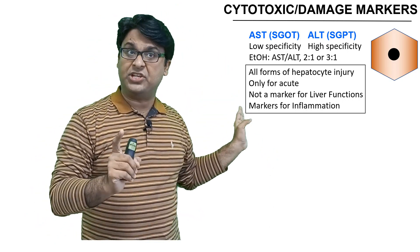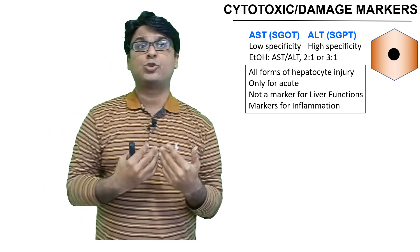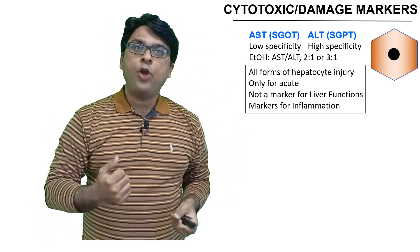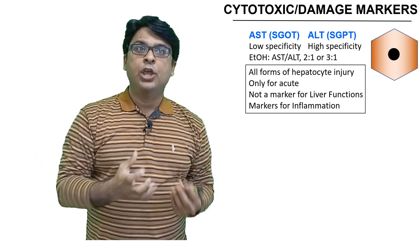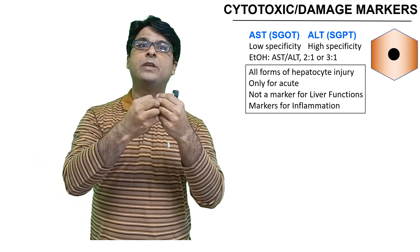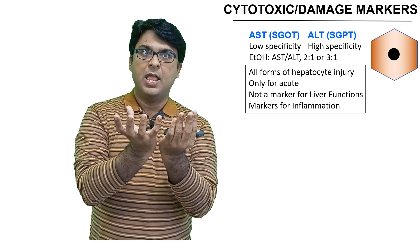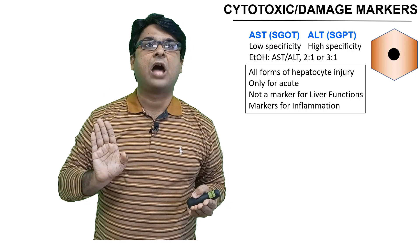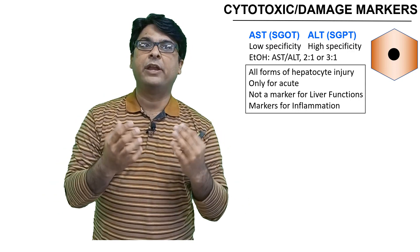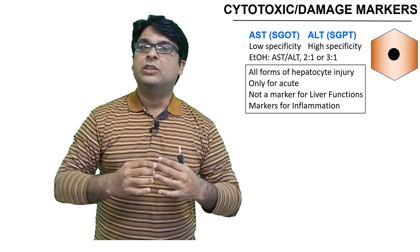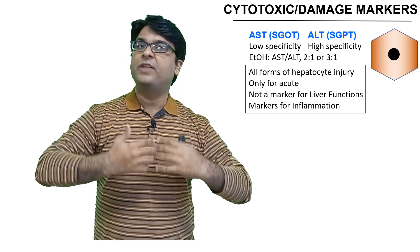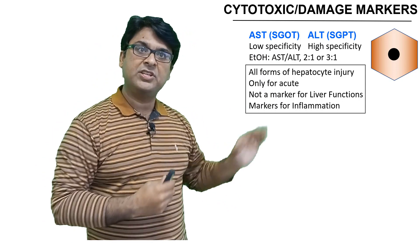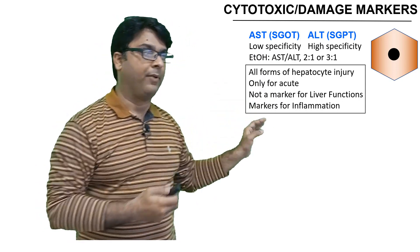These are markers only for acute disease. In chronic disease, they may actually go down. Why? Because to get high AST and ALT levels, you need hepatocytes to be rupturing. In chronic disease, most hepatocytes are transformed into fibrotic tissue — there are no more cells. If there are no cells, they will not rupture and AST will not be released. So these are markers only for acute problems.